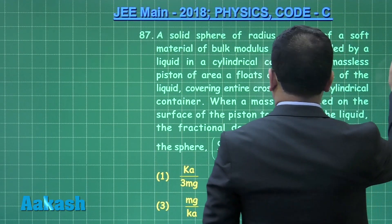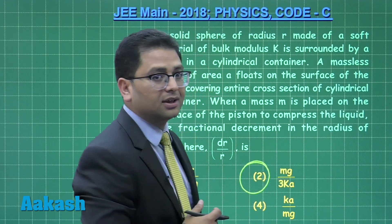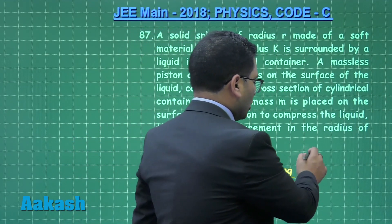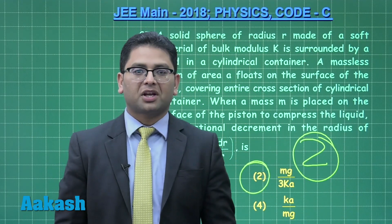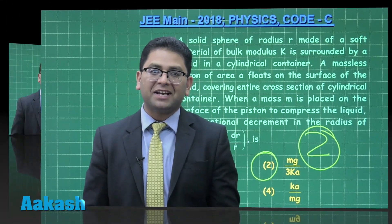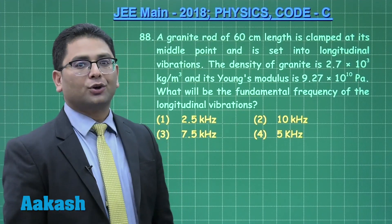So mg/3AK. Option number 2 is going to be the correct one for question number 87. Should we move to question number 88?